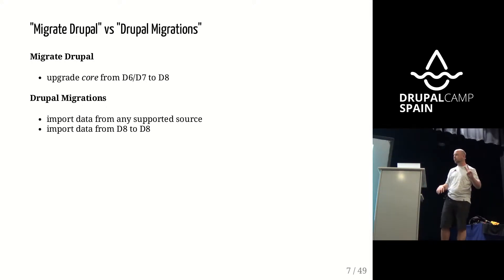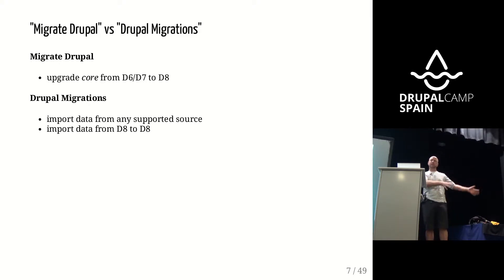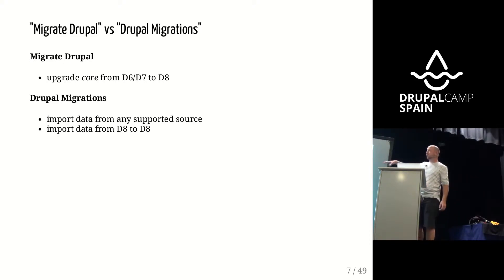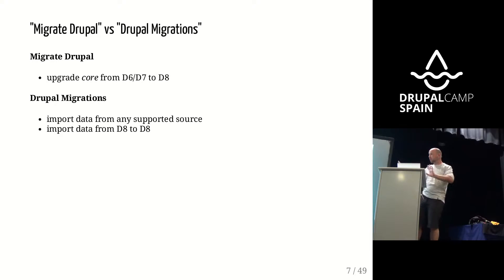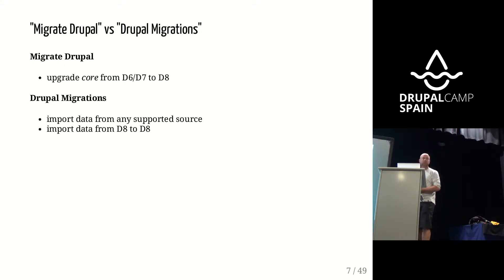A little distinction about two terms that look similar but mean different things. The Migrate Drupal module found in Drupal 8 core is a module that helps you migrate or upgrade a Drupal 7 site to a Drupal 8 site. This is based on the migration framework. When we talk about Drupal migrations — not migrate Drupal — we talk about grabbing data from any source we want and importing it into Drupal. Both are based on the migration framework, but there are different use cases.